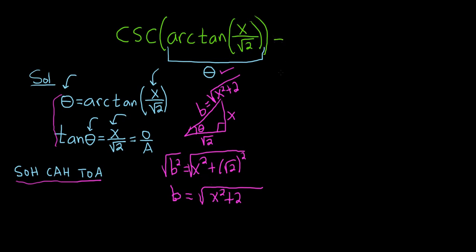So let's go back to the original question. We have the cosecant of the arctangent of x over the square root of 2. Well, this is really the cosecant of theta.